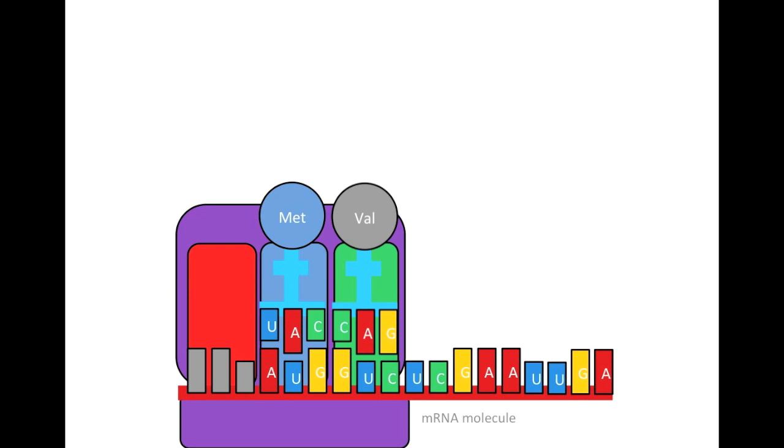Now that the two tRNAs are positioned next to each other in the A site and P site of the ribosome, a bond will form between these two amino acids. This type of bond is known as a peptide bond. As the peptide bond forms between the two amino acids, the first of the two will dissociate from its tRNA molecule.